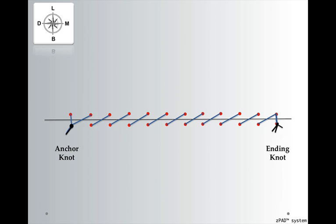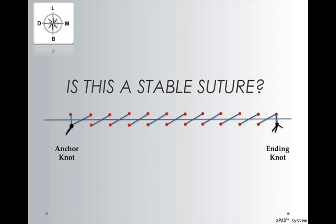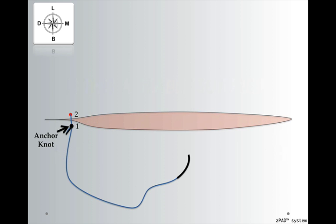So a continuous suture has an anchoring knot and an ending knot. And the suturing itself is relatively fast using the least suture material possible. Now, the problem that we have with this type of suture is that it's really not stable enough. This suture can open very easily. And then we're defeating the purpose of suturing.